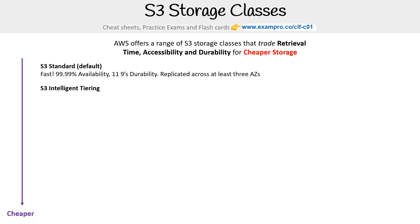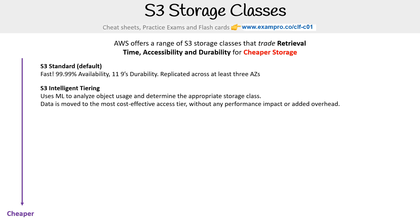Then you have S3 Intelligent Tiering. This uses ML to analyze objects and usage and determine the appropriate storage class. Data is moved to the most cost-effective access tier without any performance impact or added overhead.